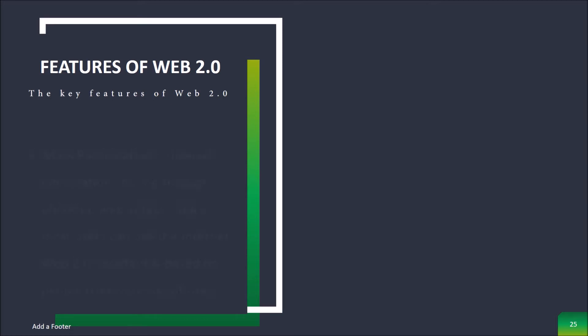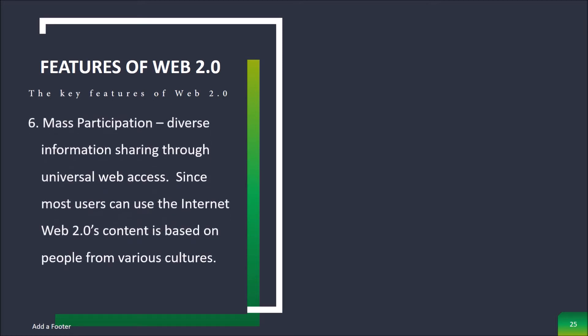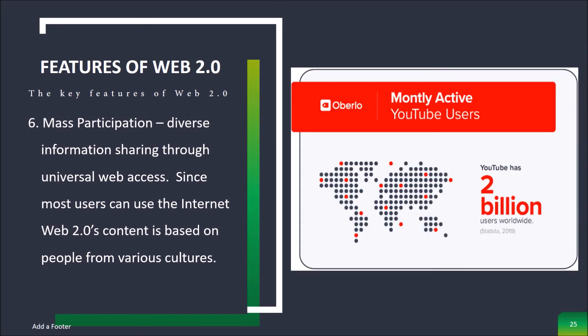And last is Mass Participation — diverse information sharing through universal web access. Since most users can use the Internet, Web 2.0 content is based on people from various cultures.